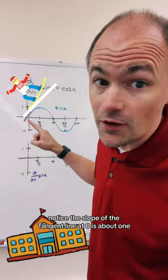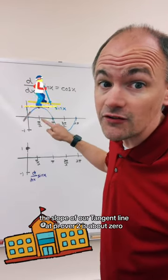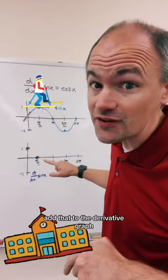Notice the slope of the tangent line at 0 is about 1. Add that point to our derivative graph. The slope of our tangent line at pi over 2 is about 0. Add that to the derivative graph.